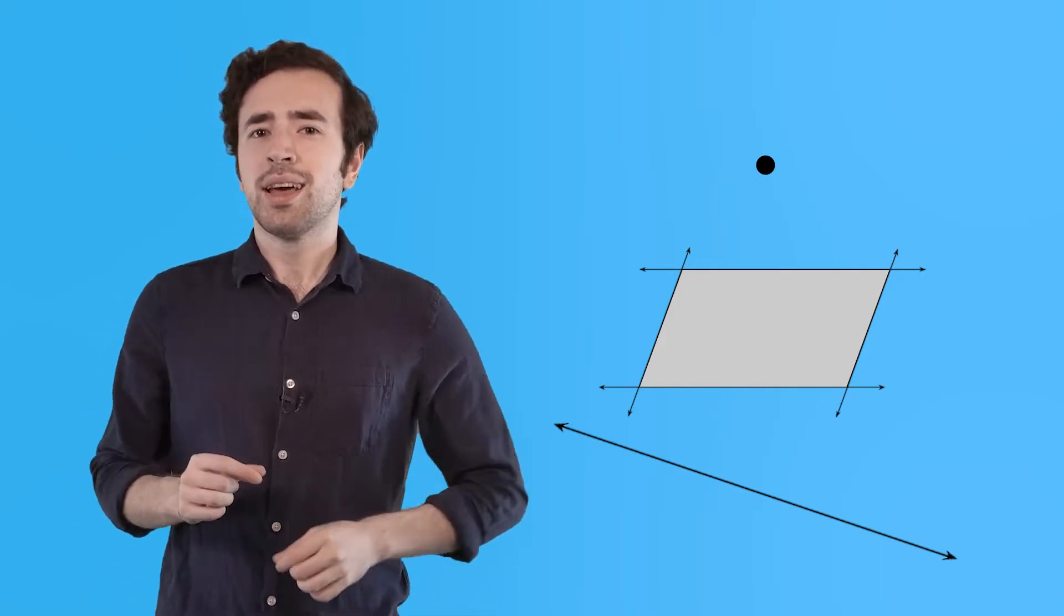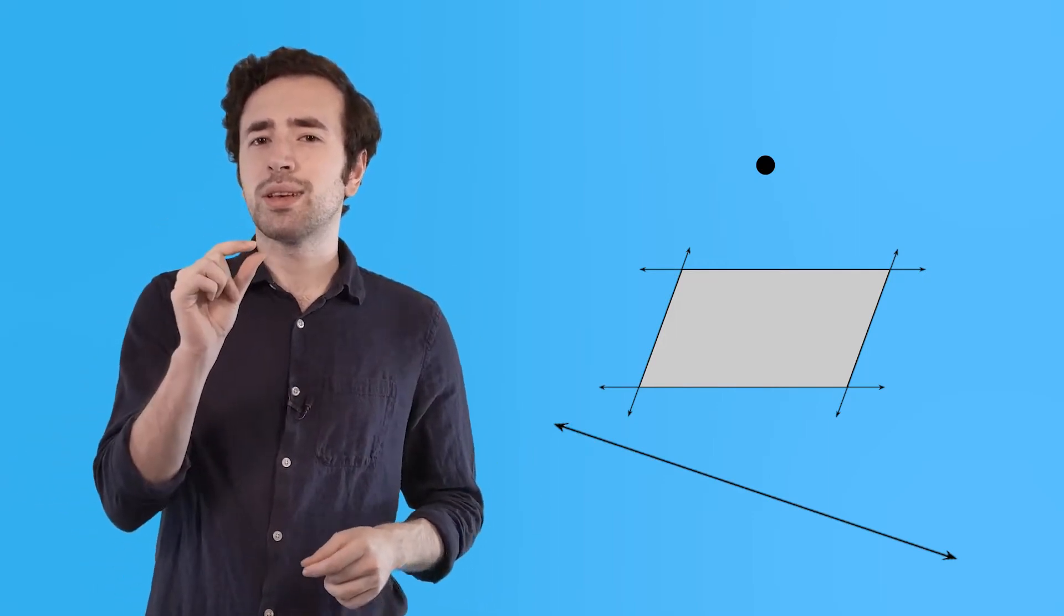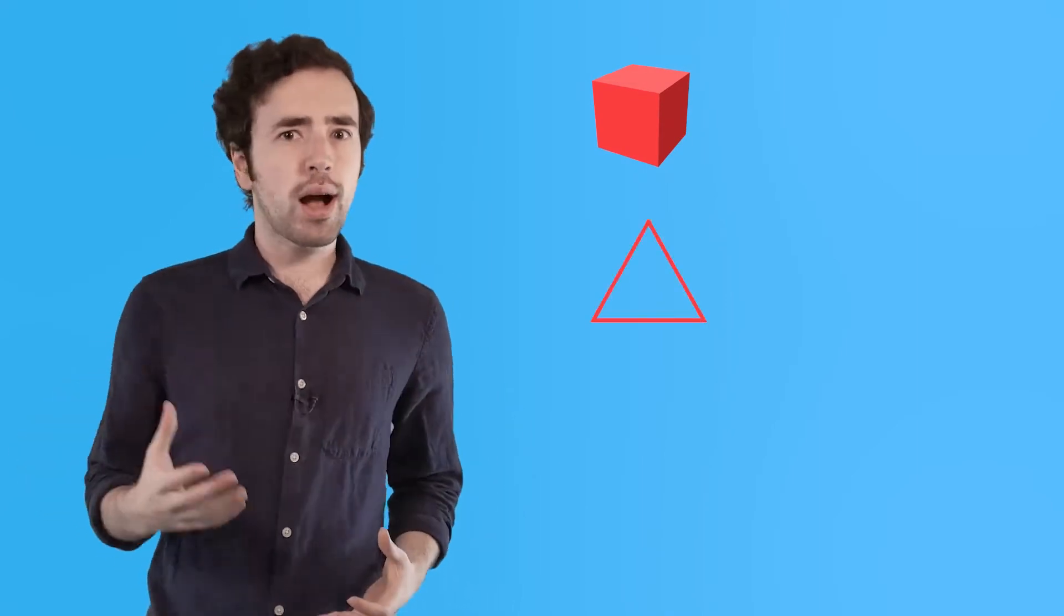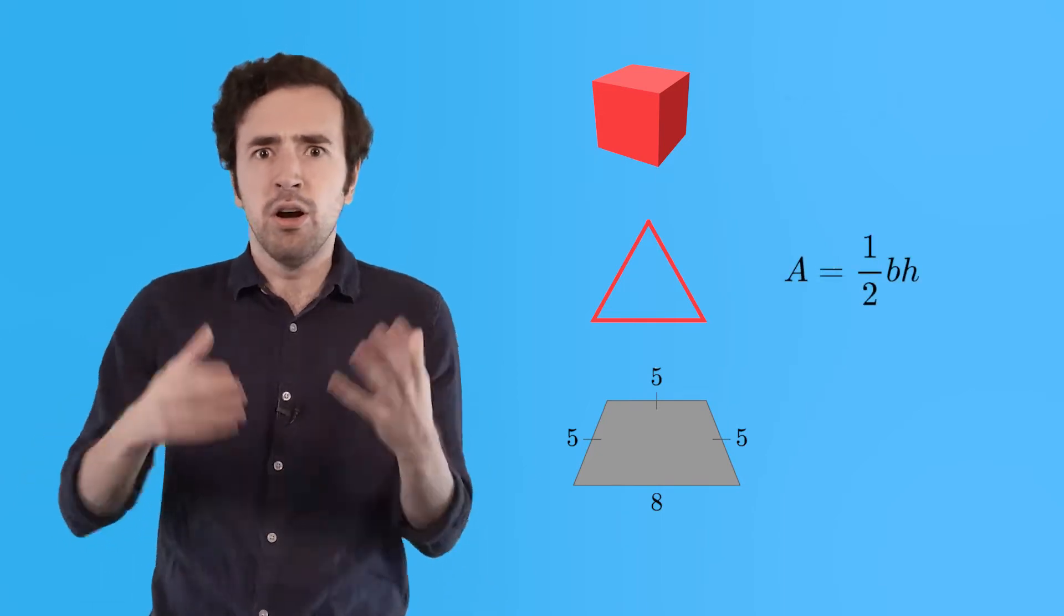Euclid realized that he could make points into lines, lines into shapes, shapes into three-dimensional figures. We have angles, triangles, quadrilaterals. We can find measurements, area, volume.